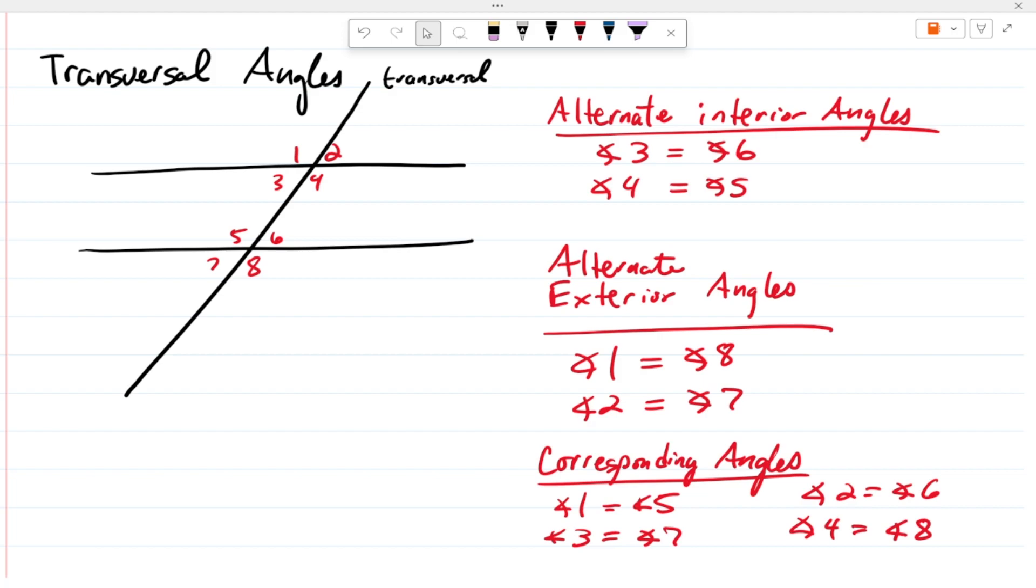So, just know how to find them and what their names are because you're going to have a couple homework problems where it's going to say, hey, angle three is 45 degrees. Find angle six. So, since they are alternate interior angles, they're both going to be 45. And that's going to be it for this video. I will see you in the next one.